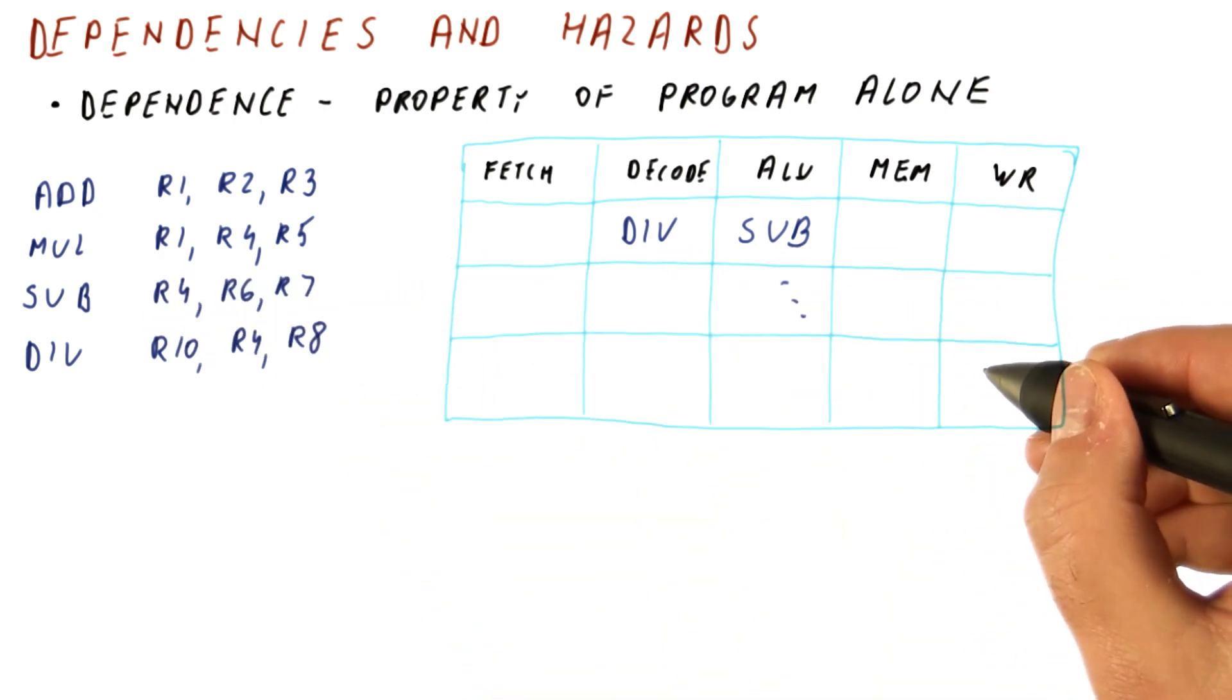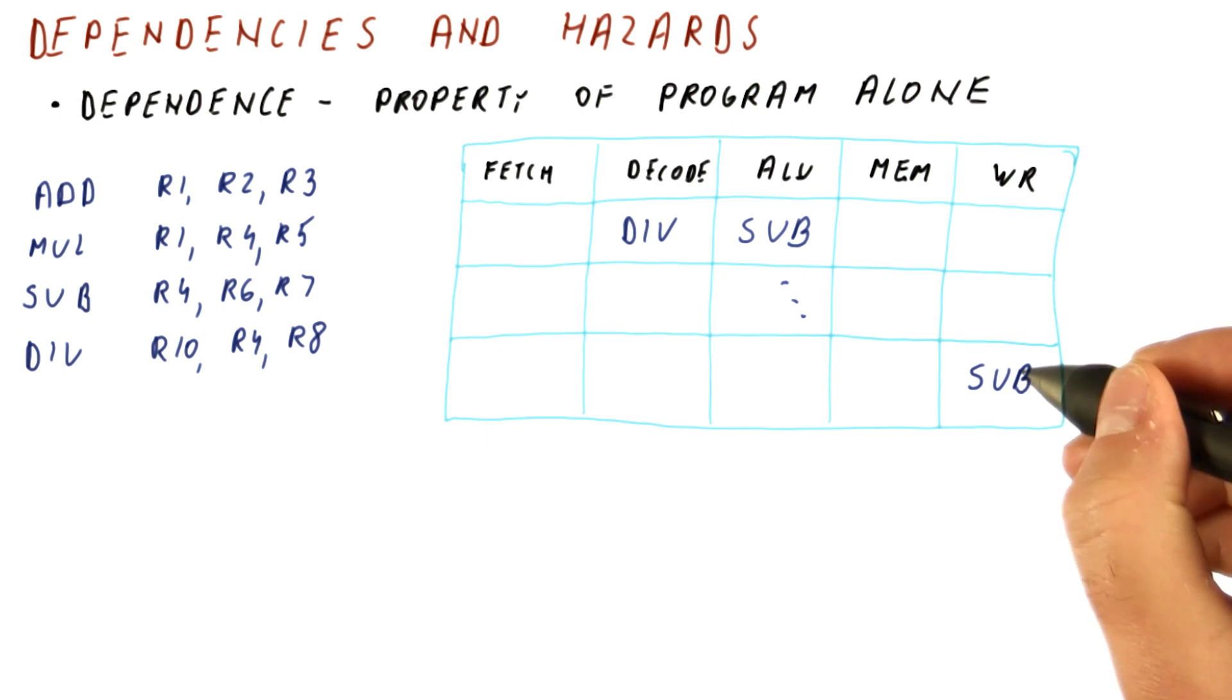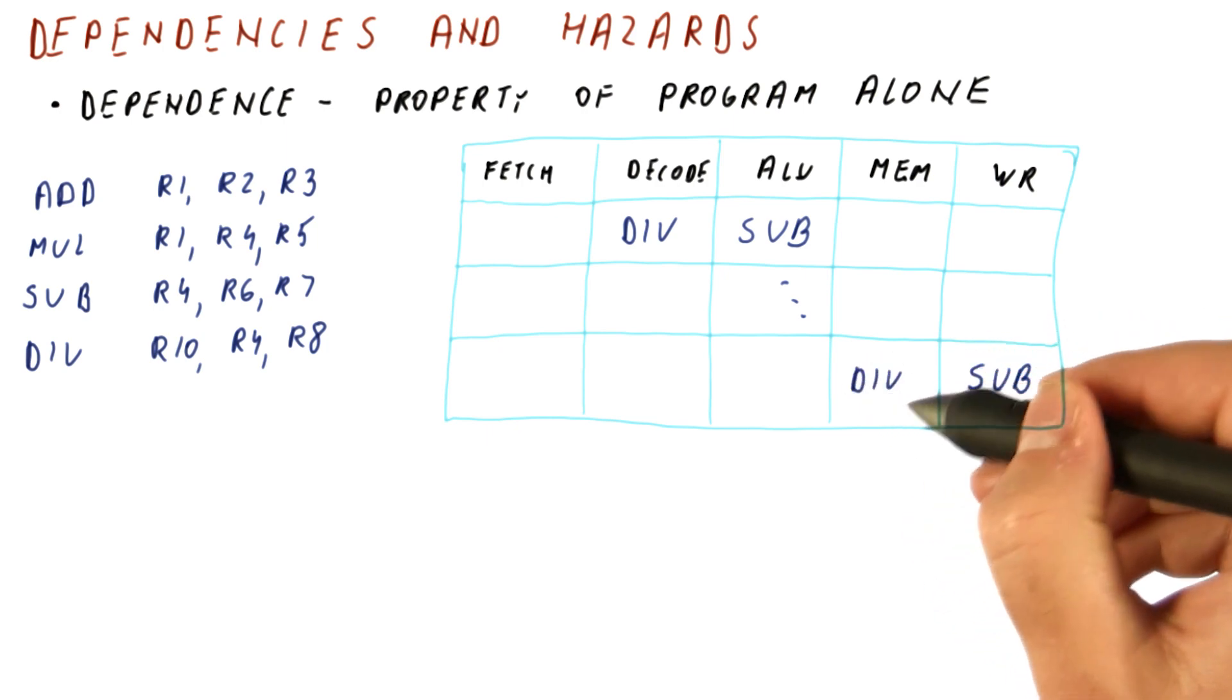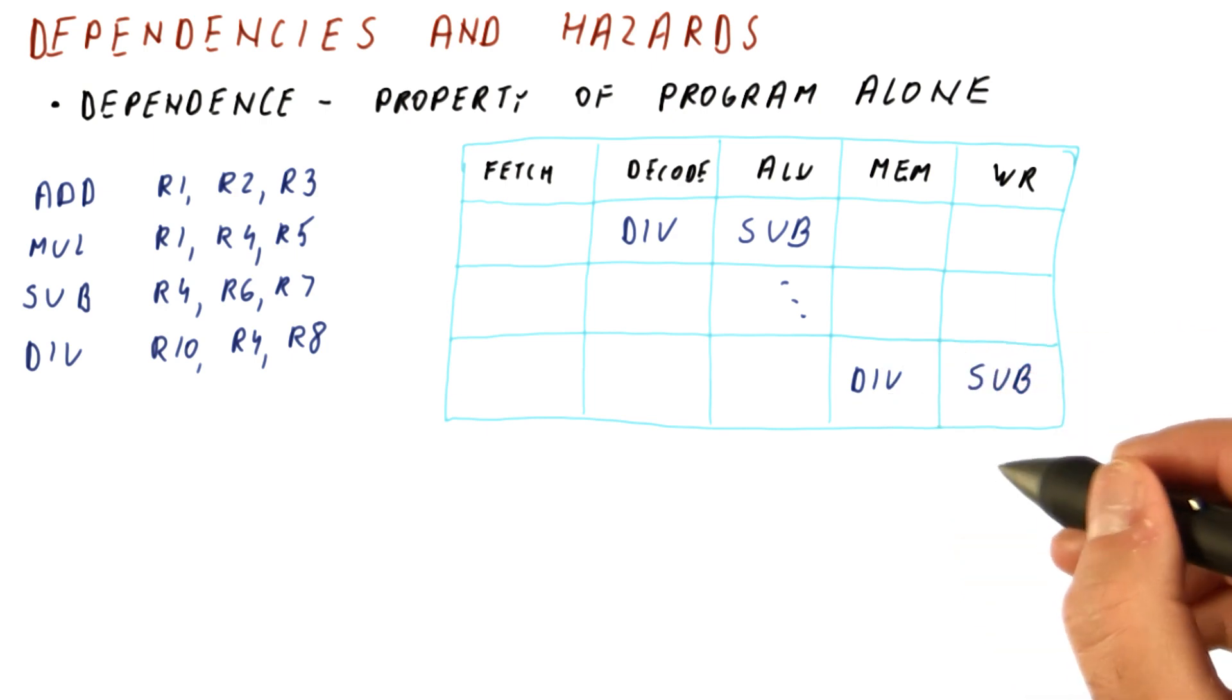Several cycles later, when the subtract is writing to that register, the divide has already computed its value. And the next cycle divide will write that bogus value into the register.